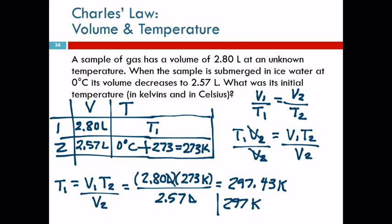That's one answer. It wants Celsius. How do I convert that to Celsius? Subtract 273. So minus 273, that's equal to 24 degrees Celsius. You can try doing this with the temperature in Celsius and you'll find out you do not get that answer.